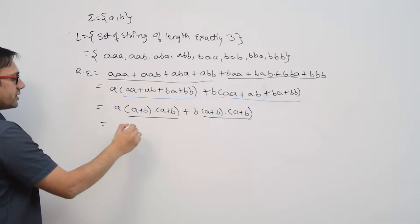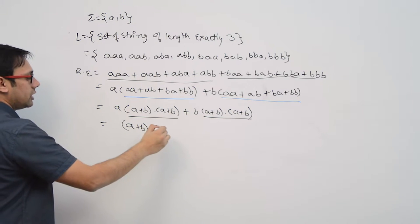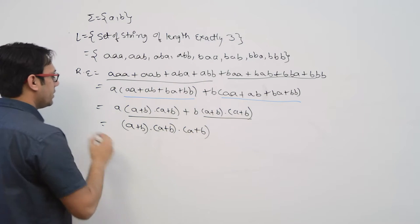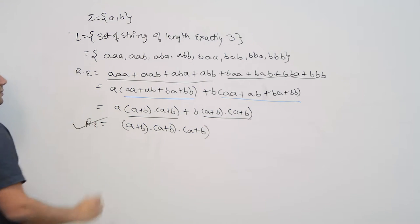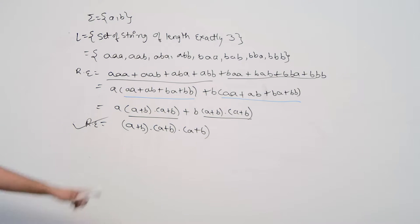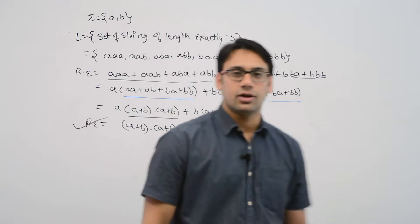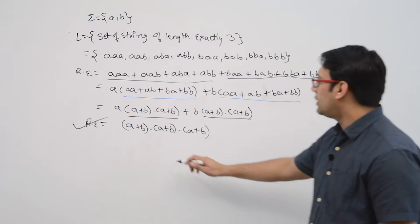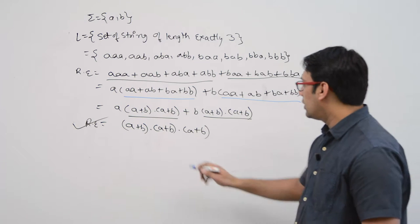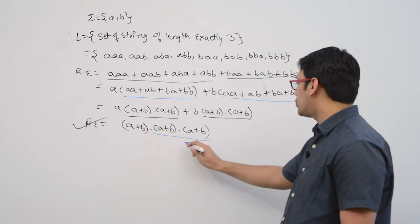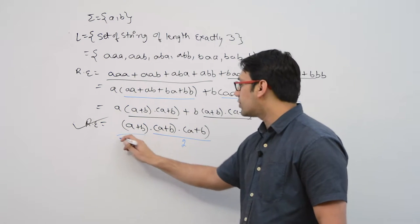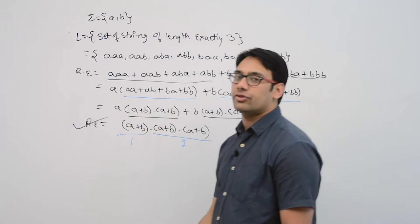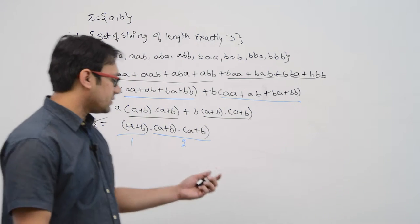So this language can be represented by (a+b)·(a+b)·(a+b). This is the regular expression representing the language of strings of length exactly 3. We are simply concatenating a string of length 1 with a string of length 2 to get strings of length 3.